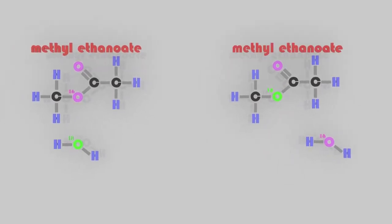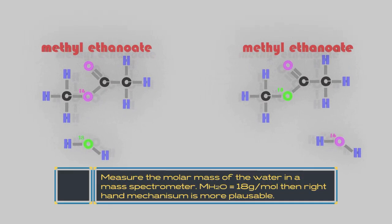So how could you measure the molar mass of the water? Well, you can use a mass spectrometer. And it turns out that the water produced has a molar mass of 18 grams per mole.